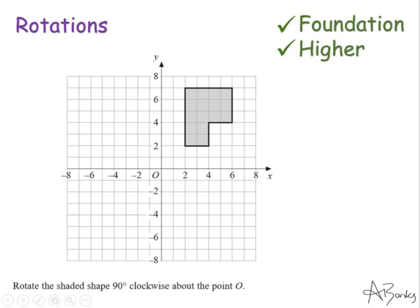This question says rotate the shaded shape 90 degrees clockwise about the point O. Now the point O is the origin and I've labeled it there, so it's this point. The information they've given me is they want a 90 degrees clockwise turn about this point. You're going to need tracing paper for this.